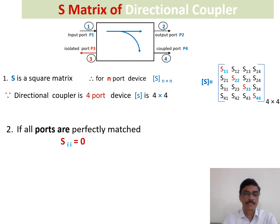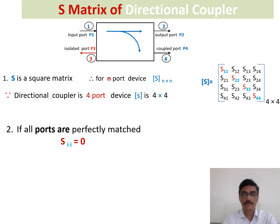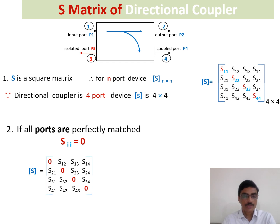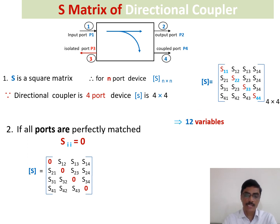The second property of the S-matrix is: if all ports are perfectly matched, the reflection coefficients at each port are 0, that is Sii equals Bi over Ai equals 0. So I can replace all diagonal elements Sii with 0 and rewrite the matrix. Initially we started with 16 variables in the 4 by 4 matrix, but after applying the perfectly matched condition, all diagonal elements became 0, reducing the number of unknowns to 12 parameters.